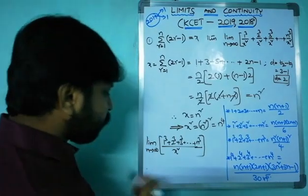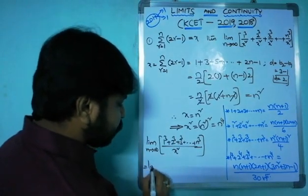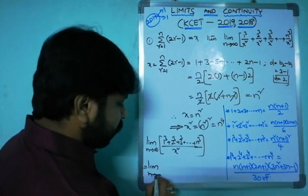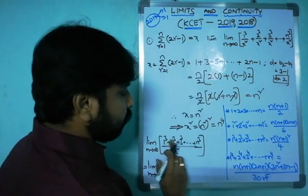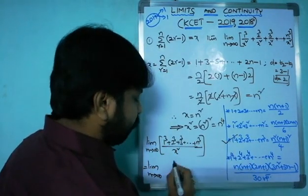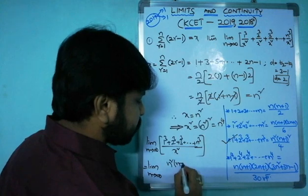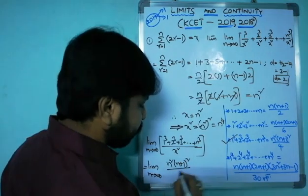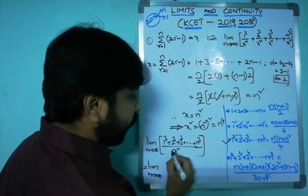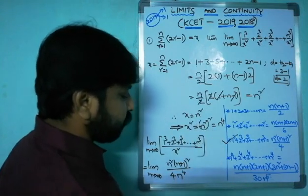The limit becomes: limit n→∞ of [n²(n+1)²/4] / x². Since x = n², x² = n⁴. So the expression becomes limit n→∞ of n²(n+1)²/(4 × n⁴).